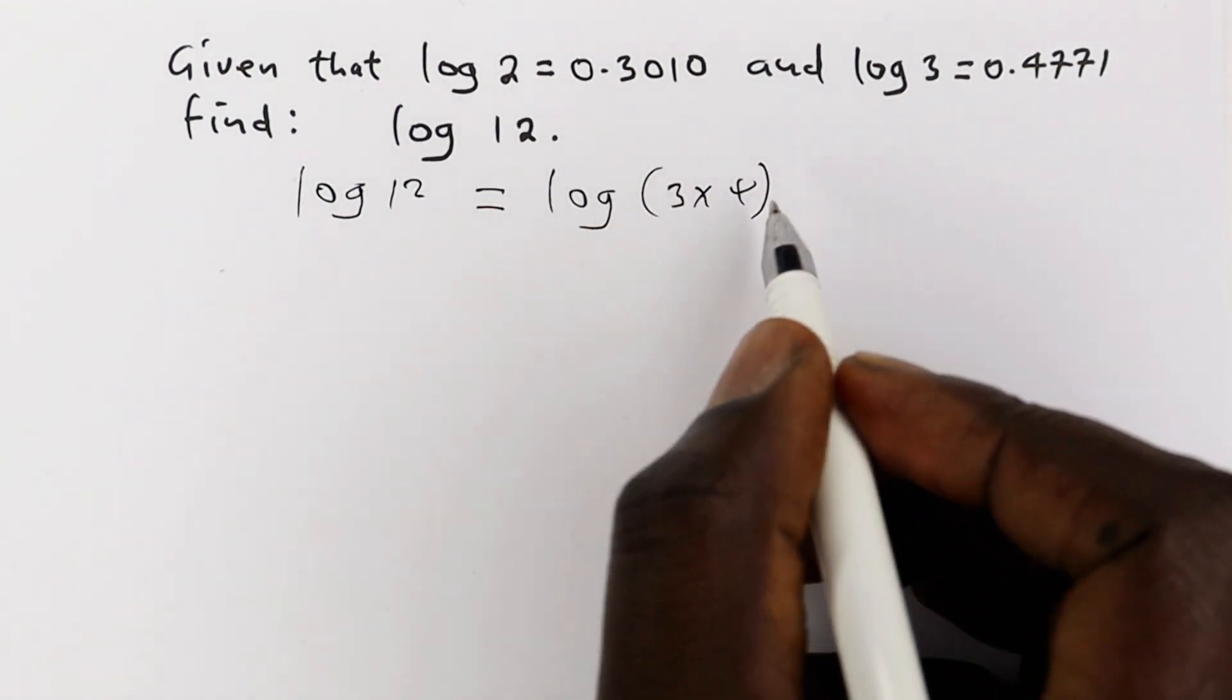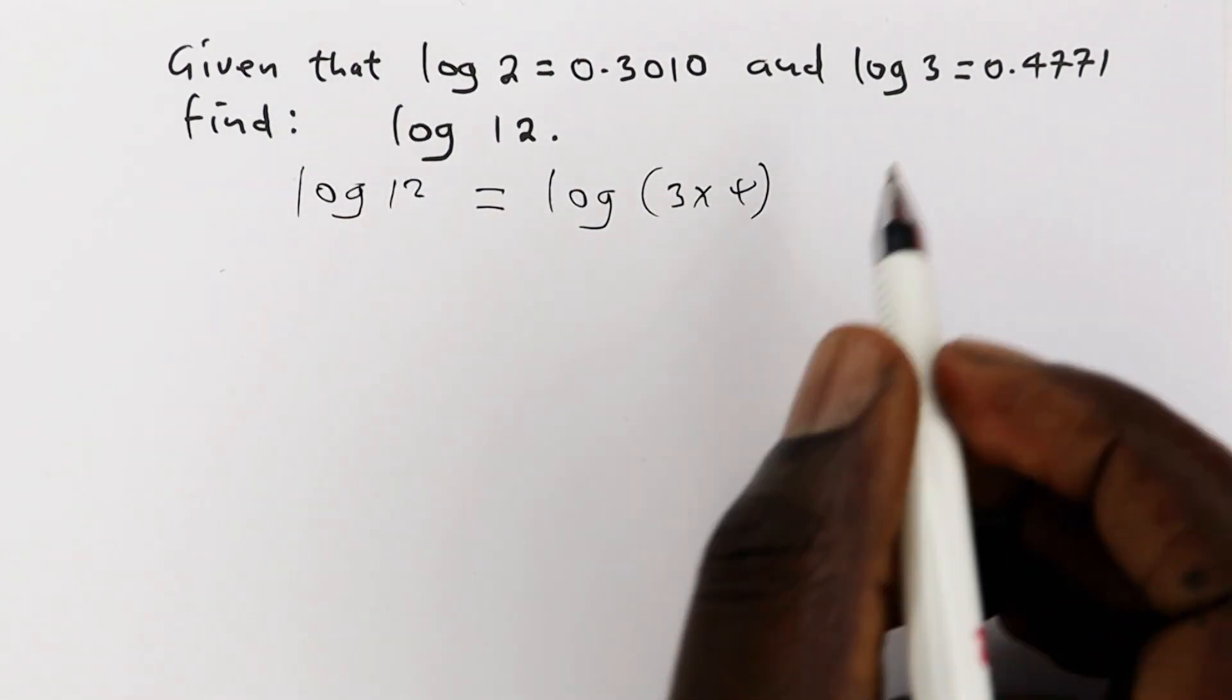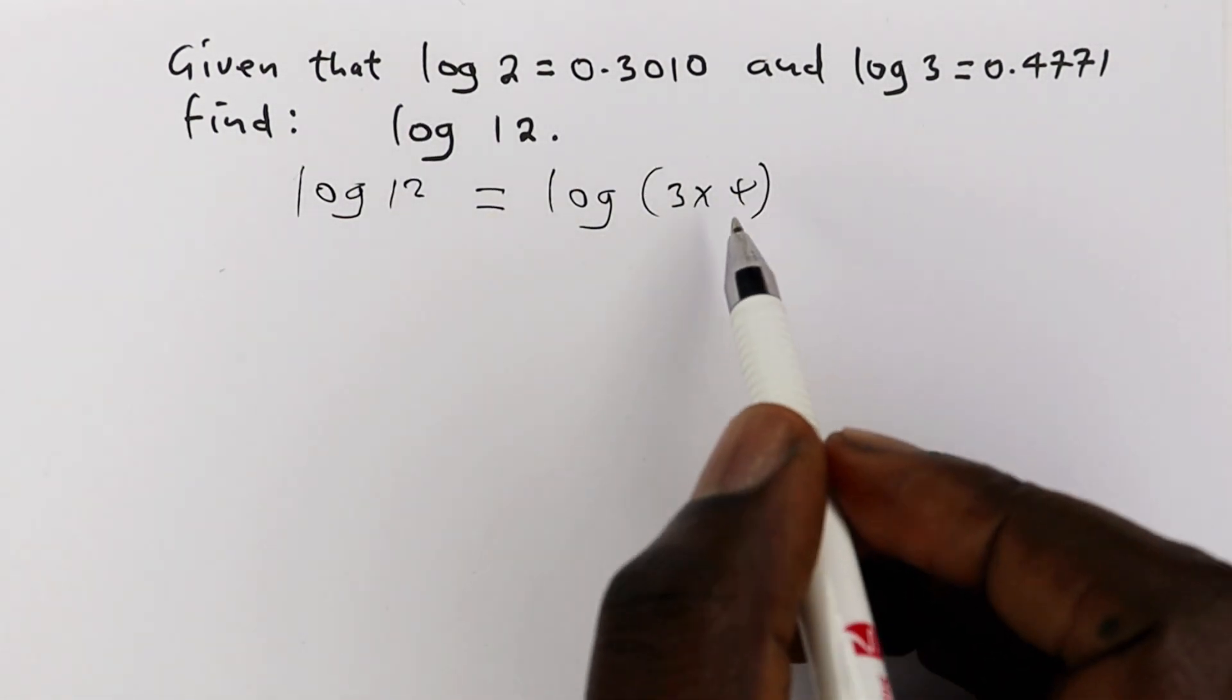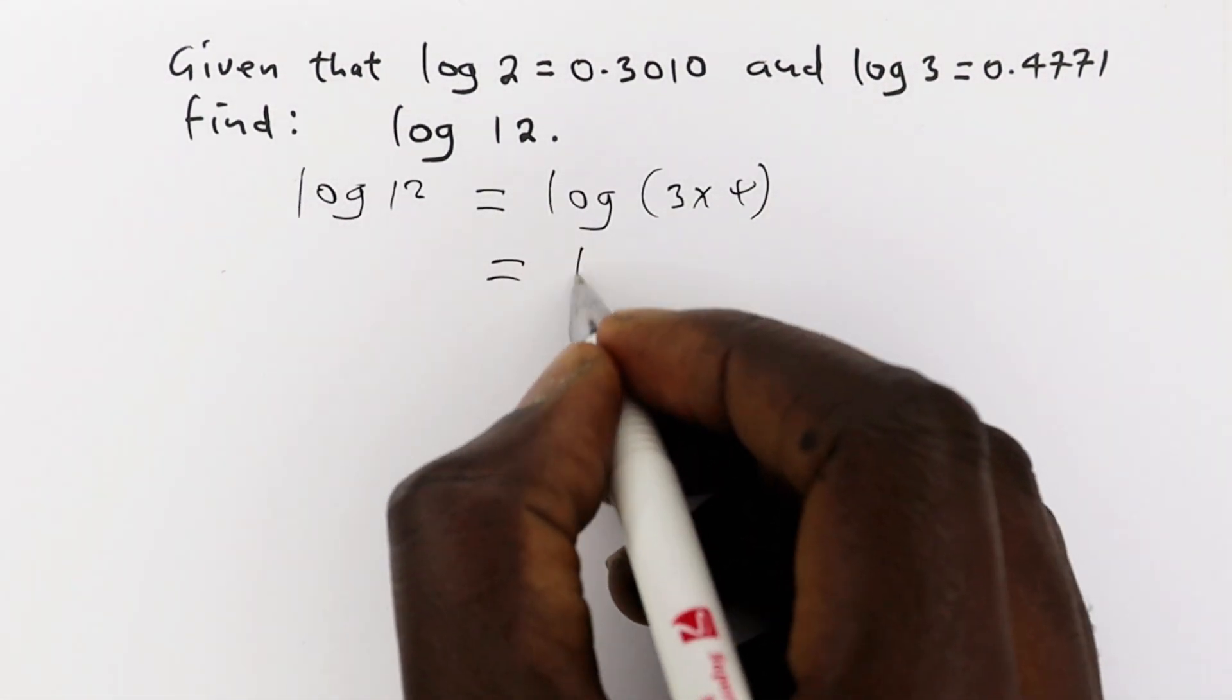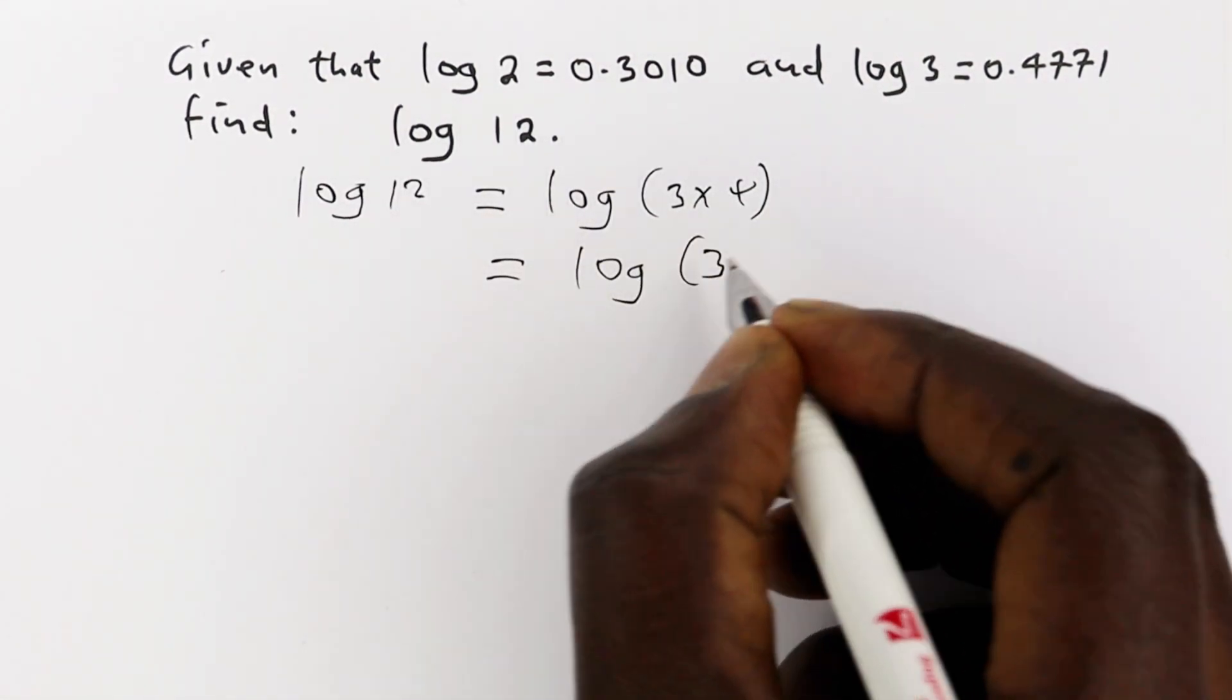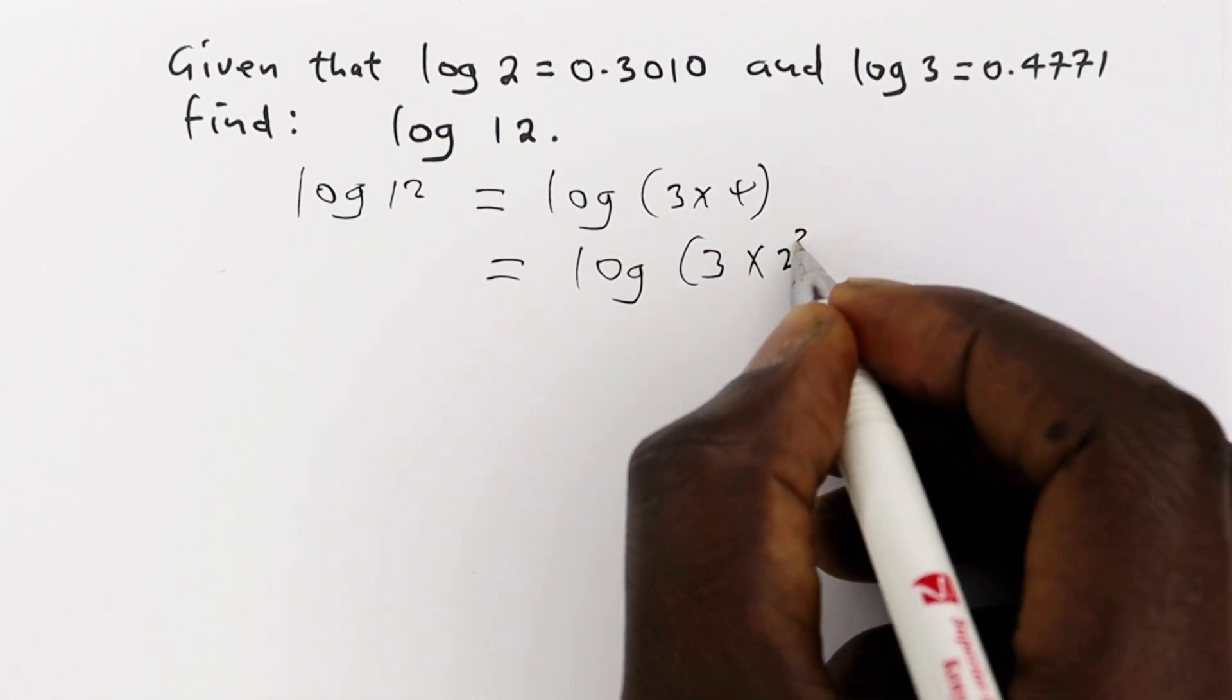You can also write 4, because 4 is not amongst the two that we've been given. So you can write 4 as 2 squared. So that will be log of 3 times 2 raised to power 2.